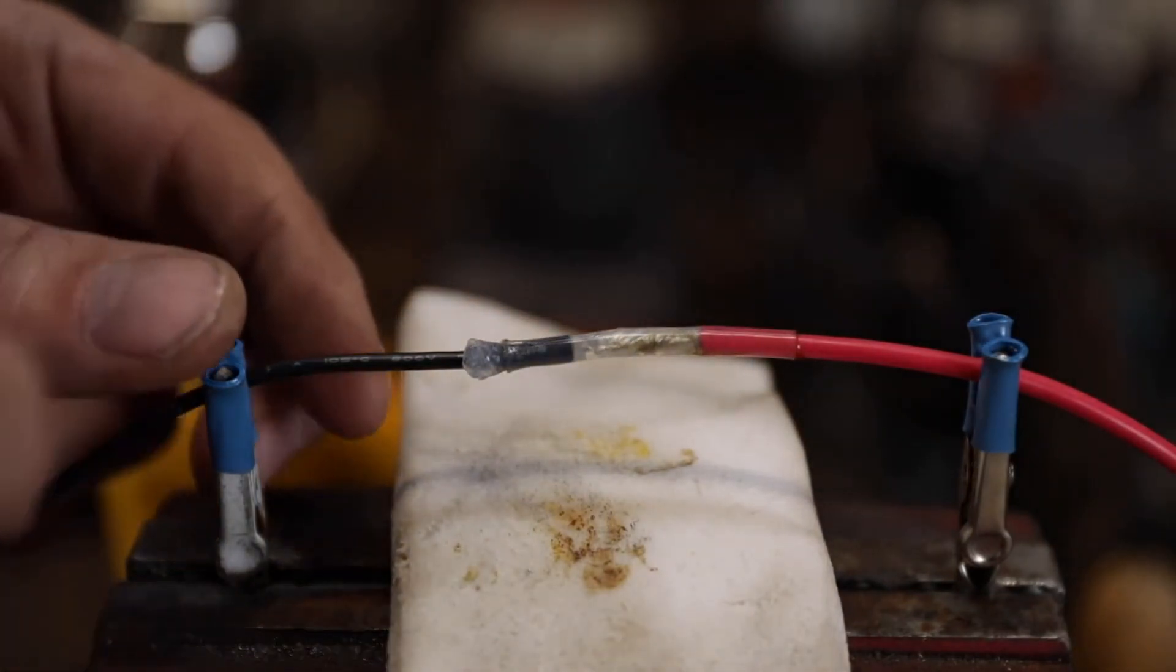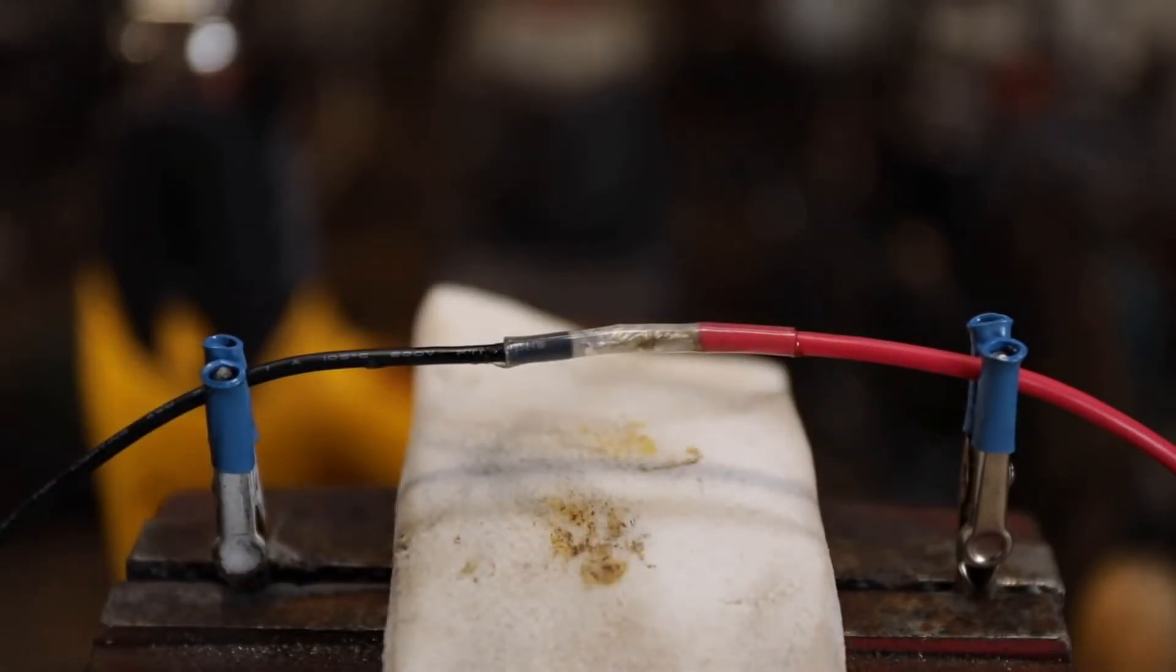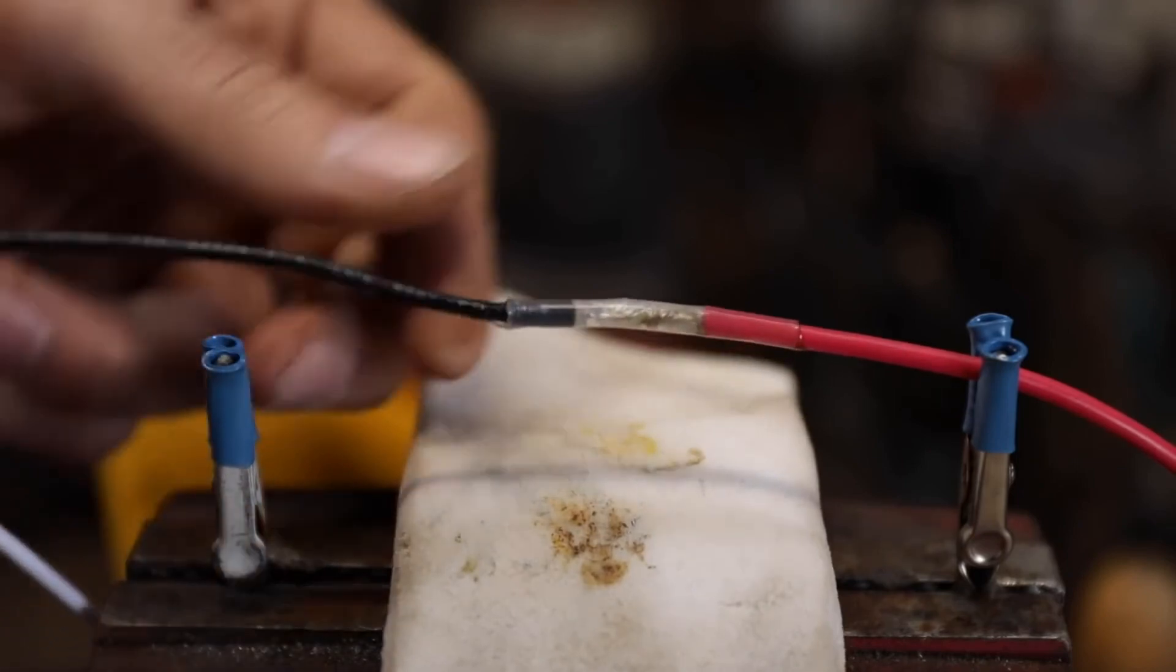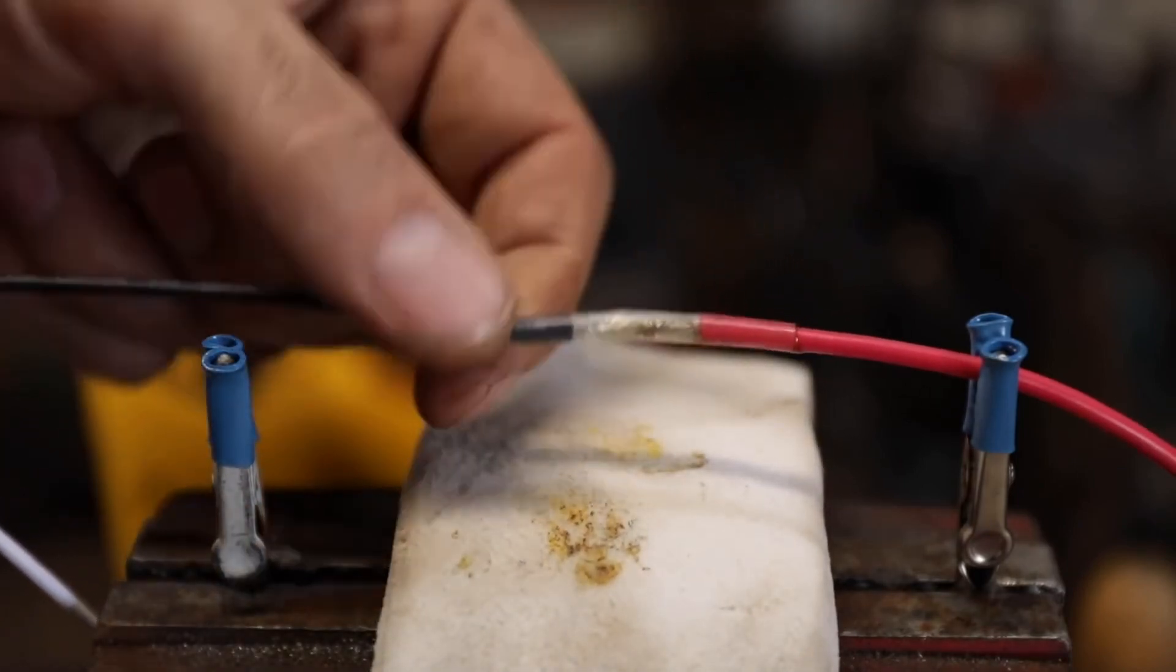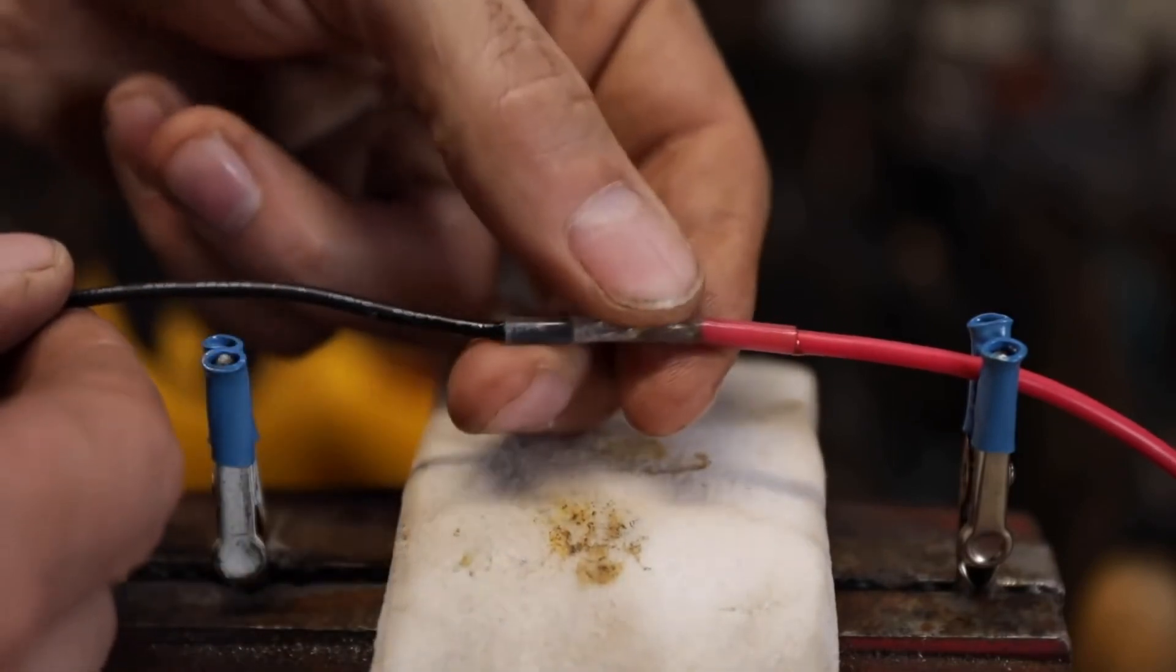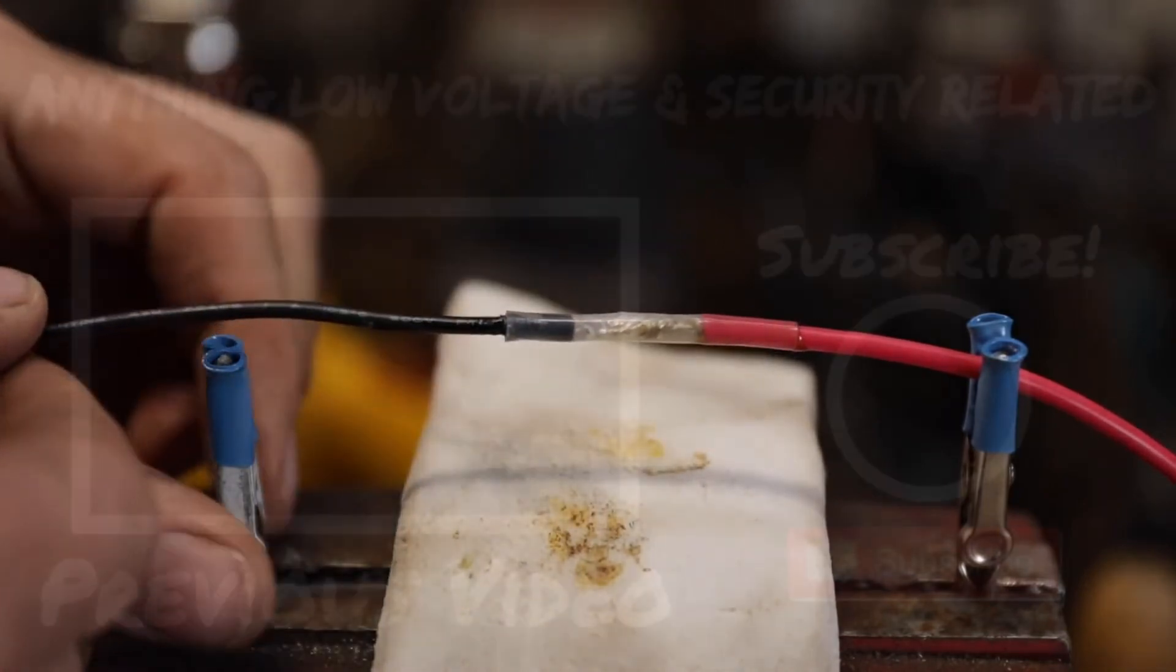Once that's cool to the touch, you can clean that silicone off there and you have a really good, as good as you're going to get, waterproof connection for joining two wires together that's probably going to be tougher than the wire itself.